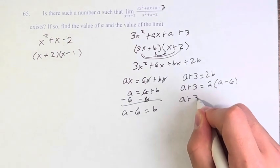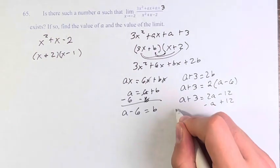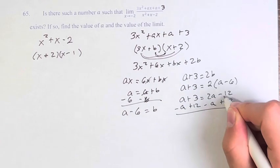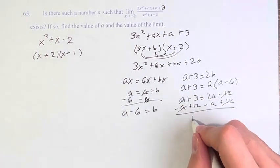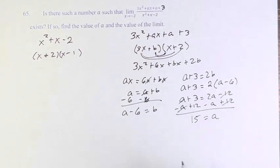a plus 3 equals 2 times b, which we know is a minus 6. a plus 3 equals 2a minus 12. Subtracting a and adding 12 to both sides, these cancel, these cancel, 3 plus 12 is 15, 2a minus a is a. Therefore, a is equal to 15.